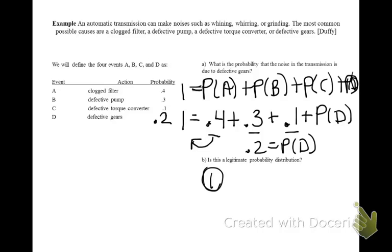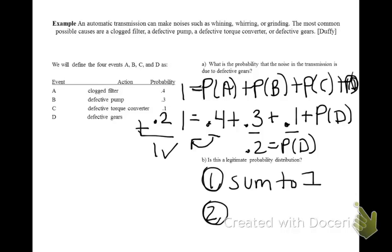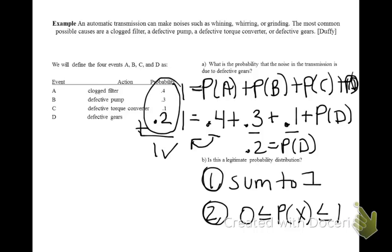To check if something is a legitimate probability distribution, you must first check that the values sum to 1. In our distribution, the values do sum to 1. The second thing you must check is that the probabilities are all between 0 and 1. Looking at the values in our table, they are all positive and all less than 1, so we've met both conditions. Therefore, this is a legitimate probability distribution.